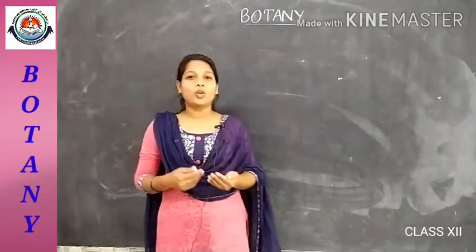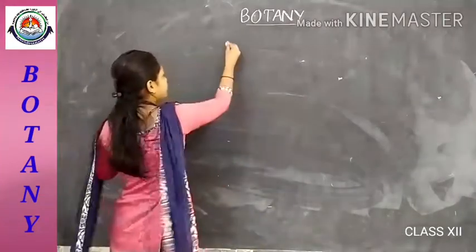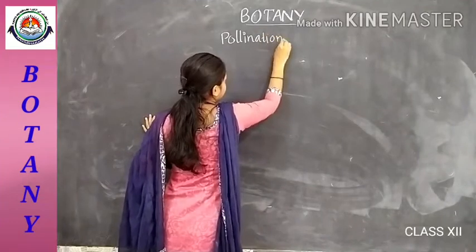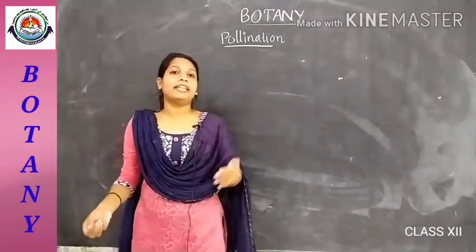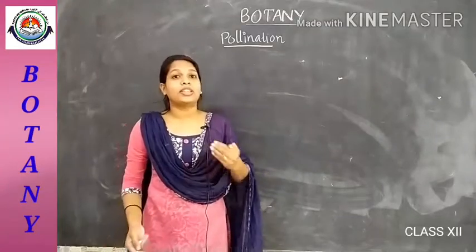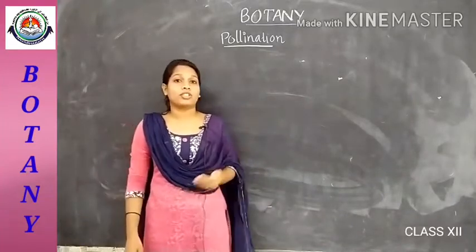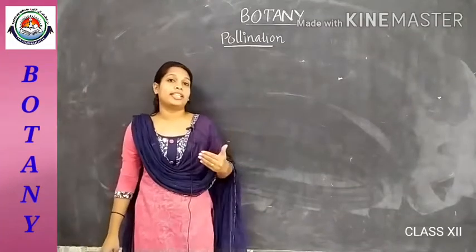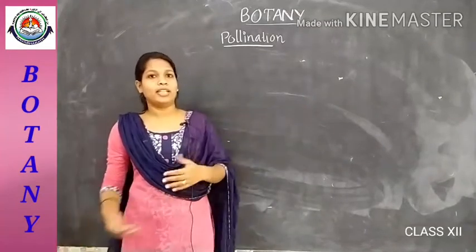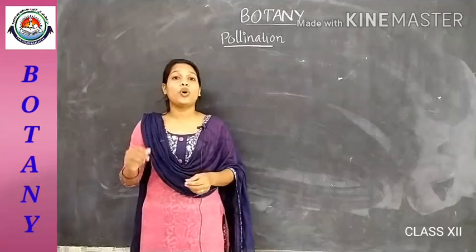Hi dears, today we are moving on to the next portion in our chapter, that is pollination. As we have studied, the male gamete in a flower is pollen grain and the female gamete in a flower is egg within the embryo sac. We have discussed the detailed structure of a male gametophyte, the pollen grain, and also the female gametophyte, the embryo sac. These two, the male gamete and female gamete in a flower, are non-motile.